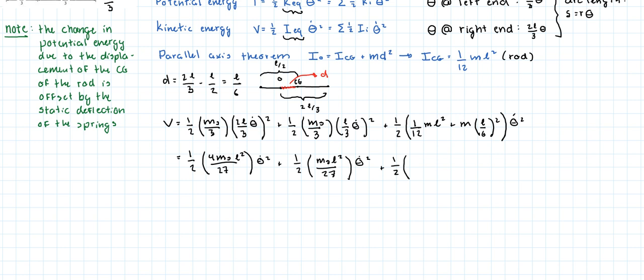Here we have mass times length squared. Here we're going to have mass times length squared as well, but we're going to have 1 over 12 plus 1 over 36, so that's 4 over 36.